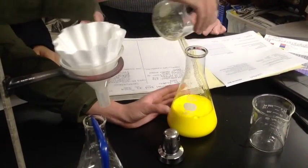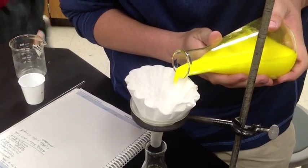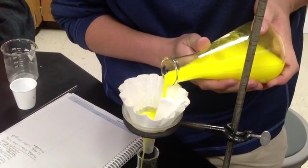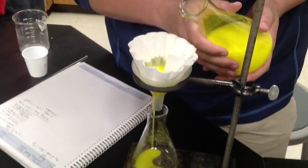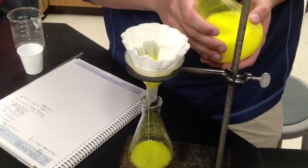What we are going to do is take the solution and pour it through filter paper to gather the filtrate, which in this case will be lead iodide, while the potassium nitrate will drain off in the Erlenmeyer flask below.